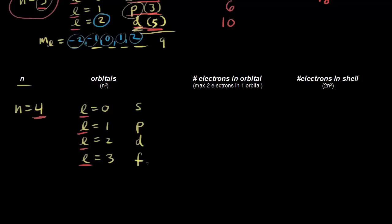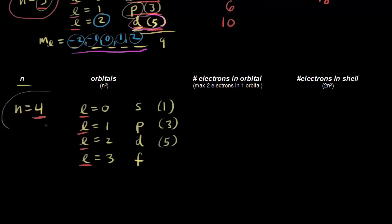The letters s, p, d, and f come from old nomenclature used in atomic spectroscopy — for example, 's' used to stand for 'sharp.' We use them to describe orbitals and their shapes. An s orbital is shaped like a sphere — one of those. p orbitals are shaped like a dumbbell — three of those. d orbitals — five of them in the fourth energy level.